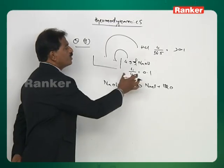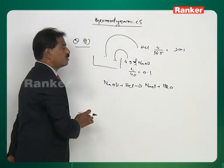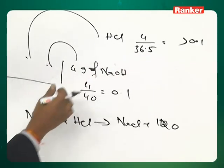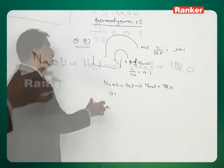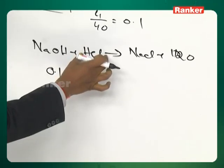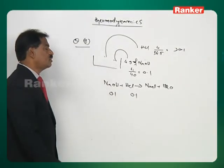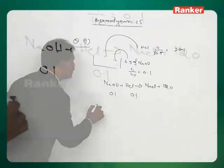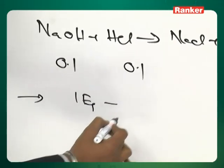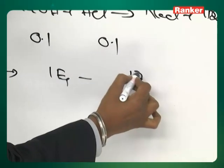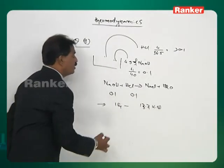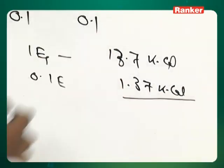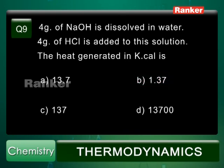X equivalents of one reactant combines with X equivalents of the other. NaOH has fewer equivalents at 0.1, so NaOH completely participates. HCl required is also 0.1 equivalents. According to the principle of equivalence, 1 equivalent liberates 13.7 kilocalories, so 0.1 equivalents liberates 1.37 kilocalories. Answer is B.